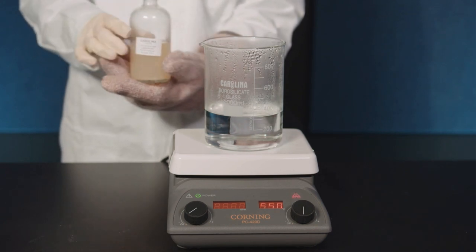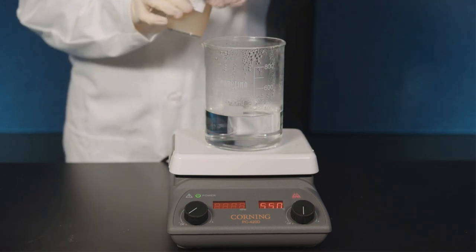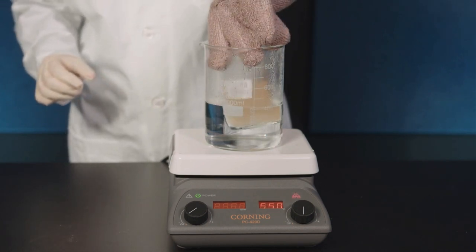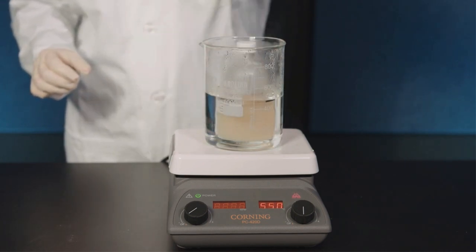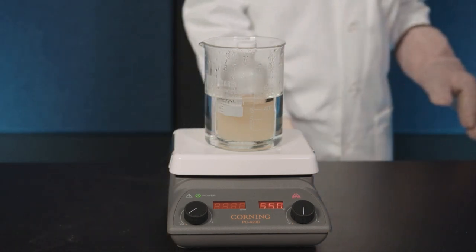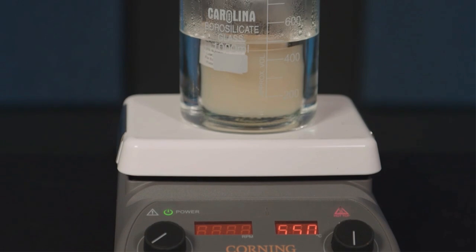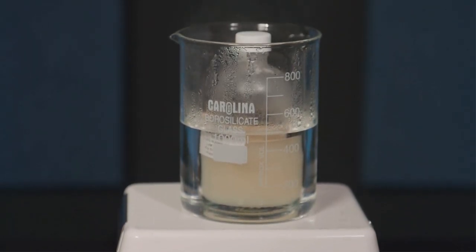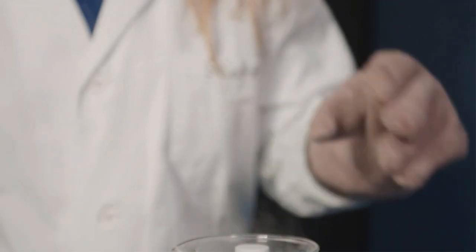Make sure the water level stays even with or higher than the level of agar in the bottle during the entire melting process or the agar will not melt. Bring the water to a boil. Keep the bottle in the boiling water until it is completely melted. Depending on the volume of the agar, this may take anywhere from 20 to 50 minutes from the time the bottle is placed into the water.